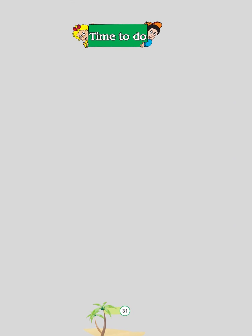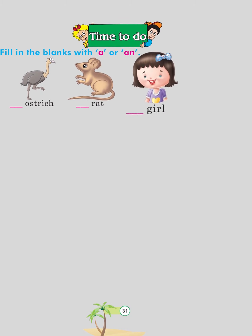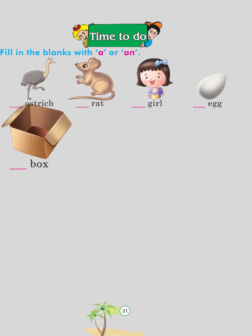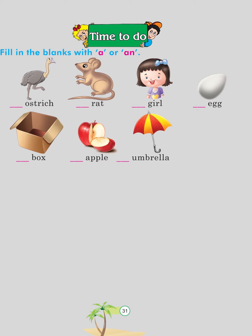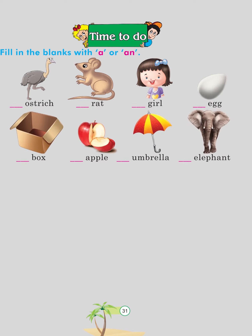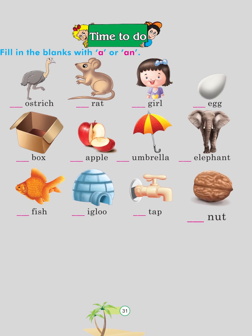Time to do. Fill in the blanks with a or an: an ostrich, a rat, a girl, an egg, a box, an apple, an umbrella, an elephant, a fish, an igloo, a tap, a nut.